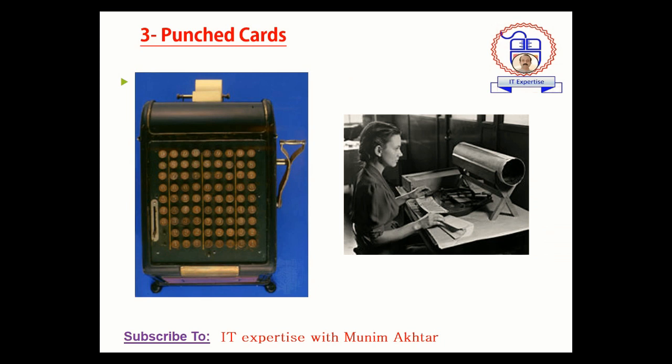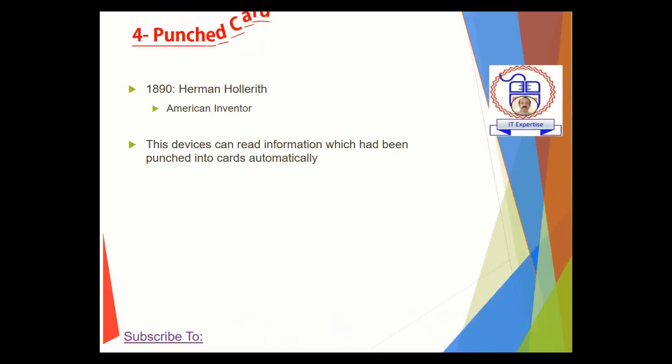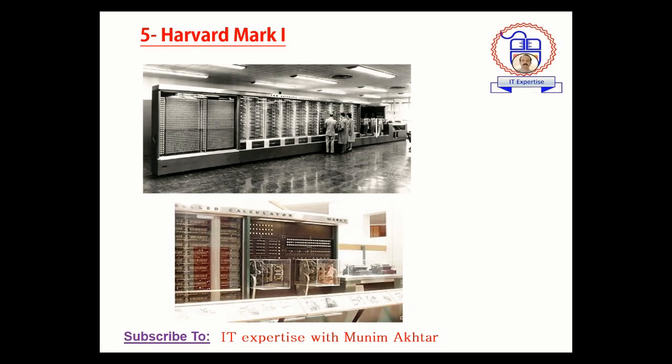Next is the punch card. The punch card was a machine which was normally used as both an input device and an output device. In 1890, Herman Hollerith, an American inventor, designed this device. It could read information which had been punched into cards automatically, and after that the particular processed data could be visualized on the punch card as well.